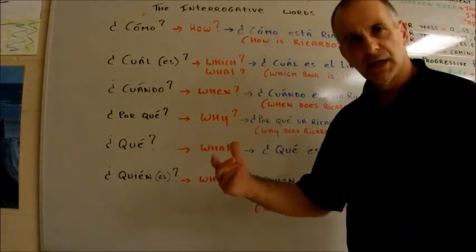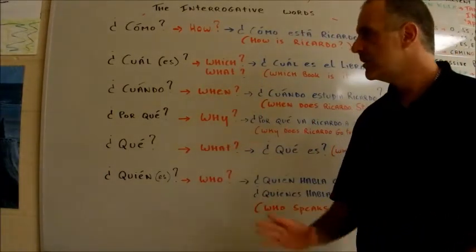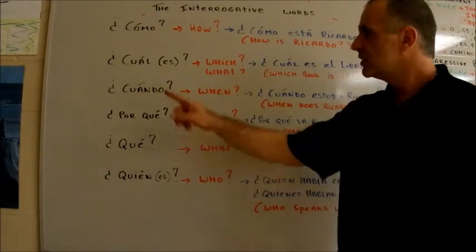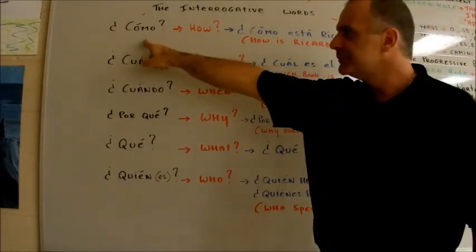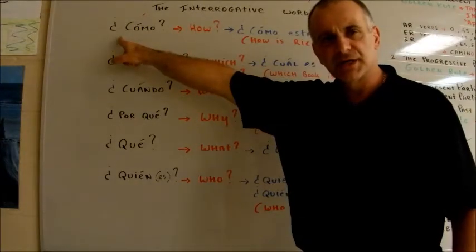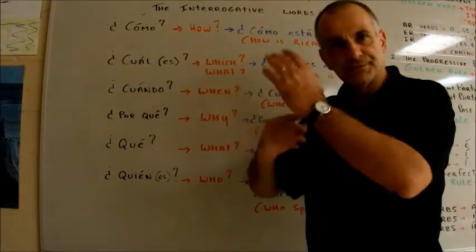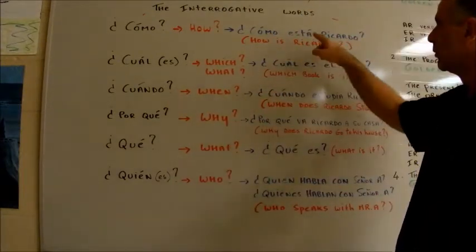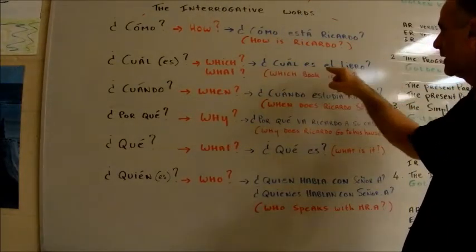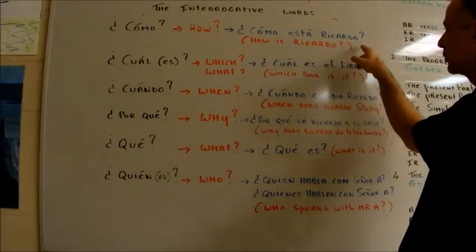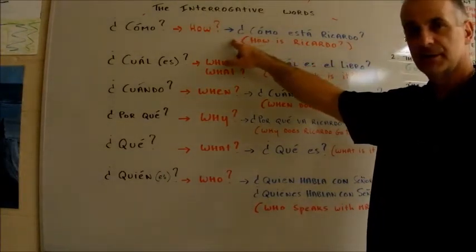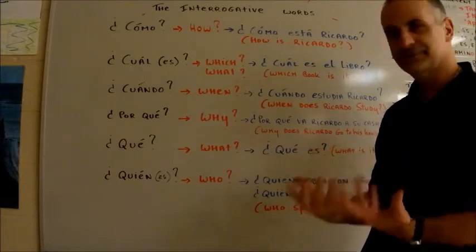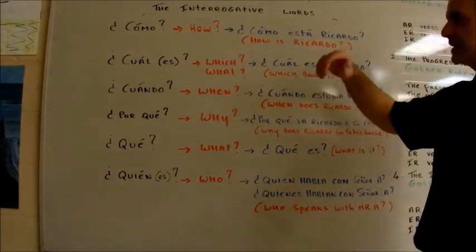Let's move on to the next word that we have here. By the way, I told you this before, I'm going to say it again. When you ask a question in Spanish, you have the question mark at the end. And you do have another question mark in the very beginning. Inverted, upside down. See? Look at this. Como esta Ricardo? Cual es el libro? You see? You have the question mark at the end. And in the very beginning. It's kind of nice. It's different. You know?